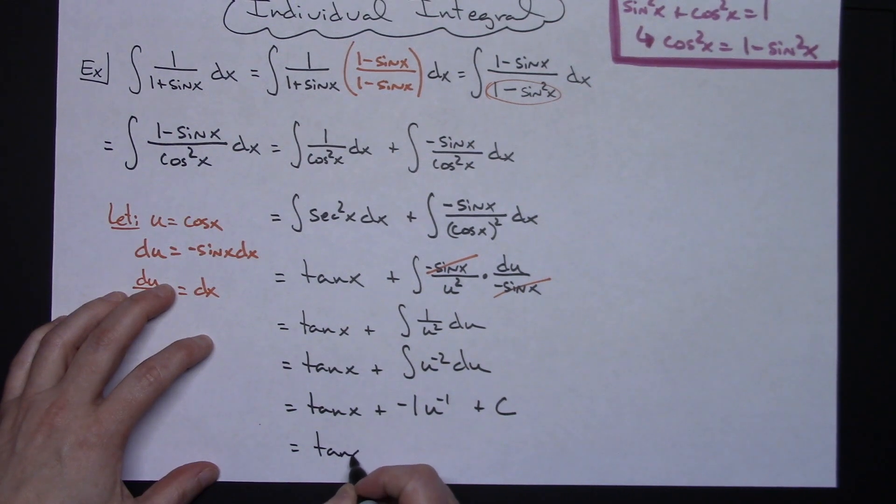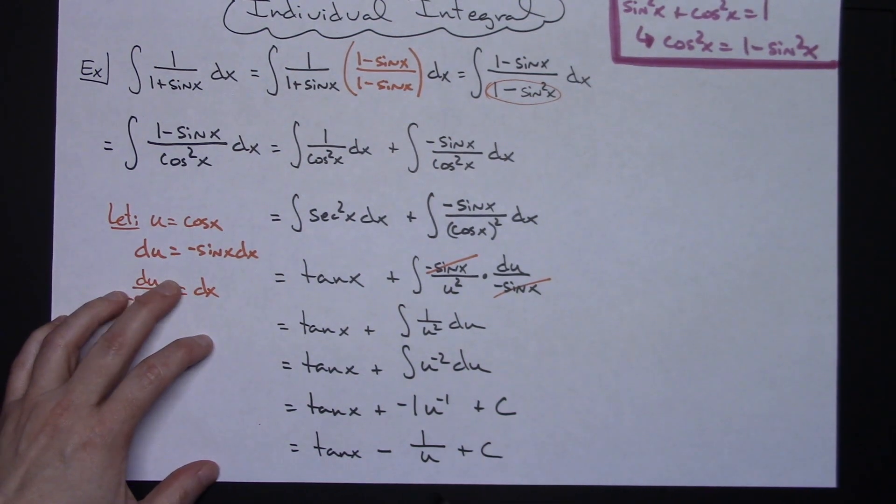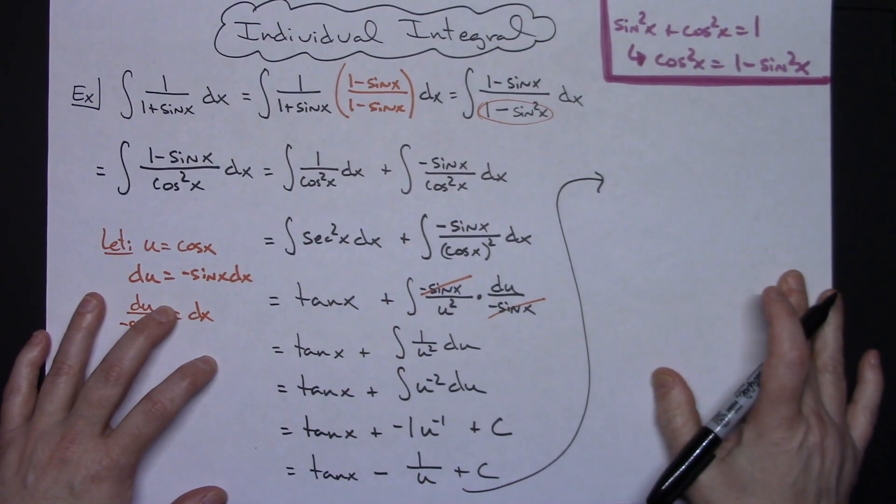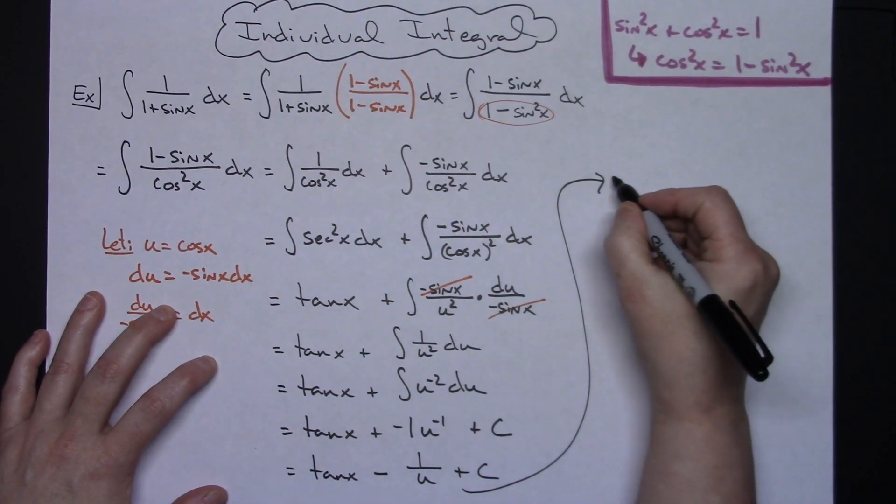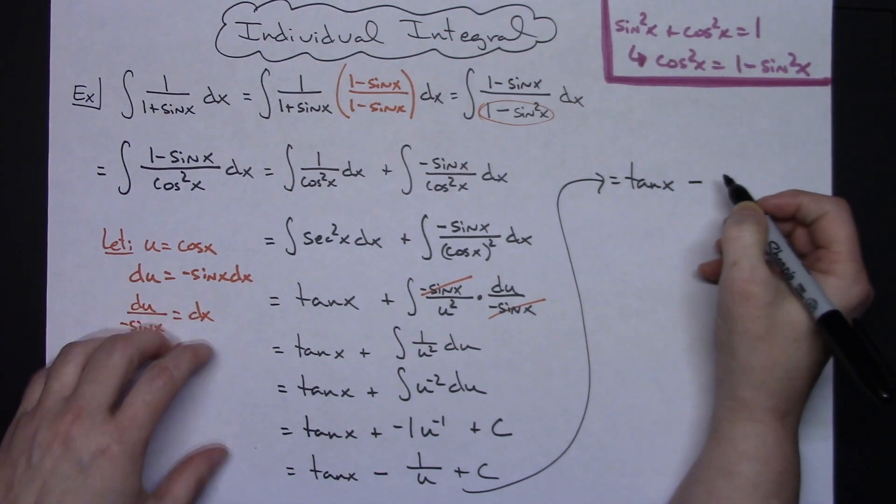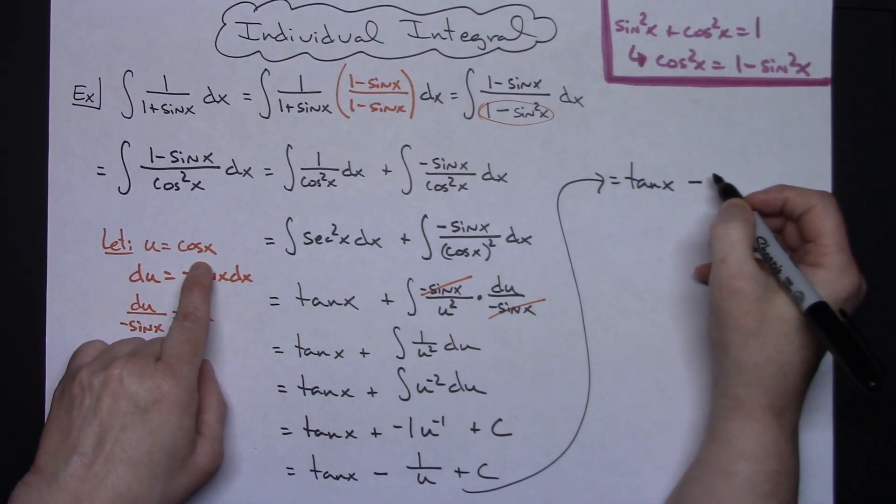And then let's rewrite this so that we have a tangent x let's make that a minus let's move this to the bottom so I'll have a 1 over u plus c. Coming up here to finish then we'll have a tangent x.